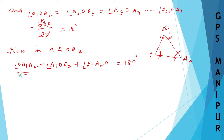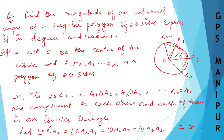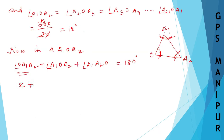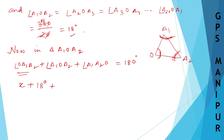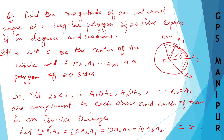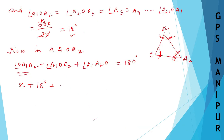Now let us take triangle A1OA2. In triangle A1OA2, angle OA1A2 plus angle A1OA2 plus angle OA2A1 equals 180 degrees. So: X plus 18 plus X equals 180.